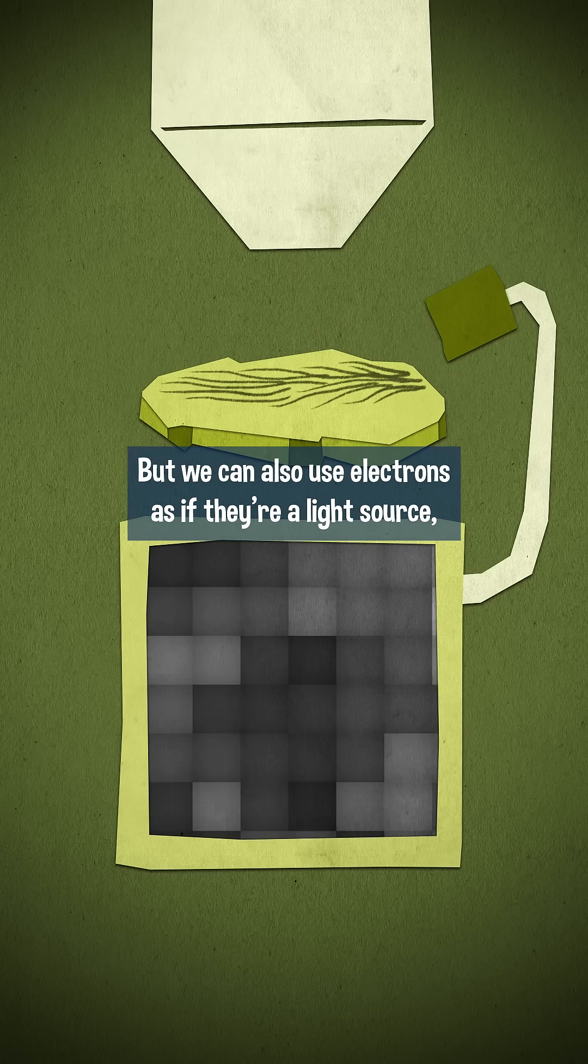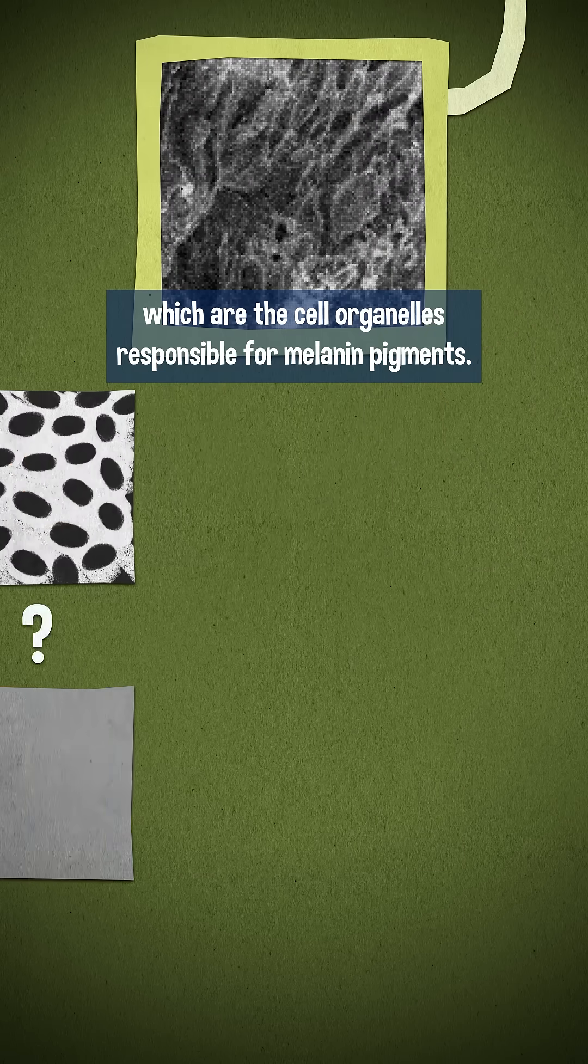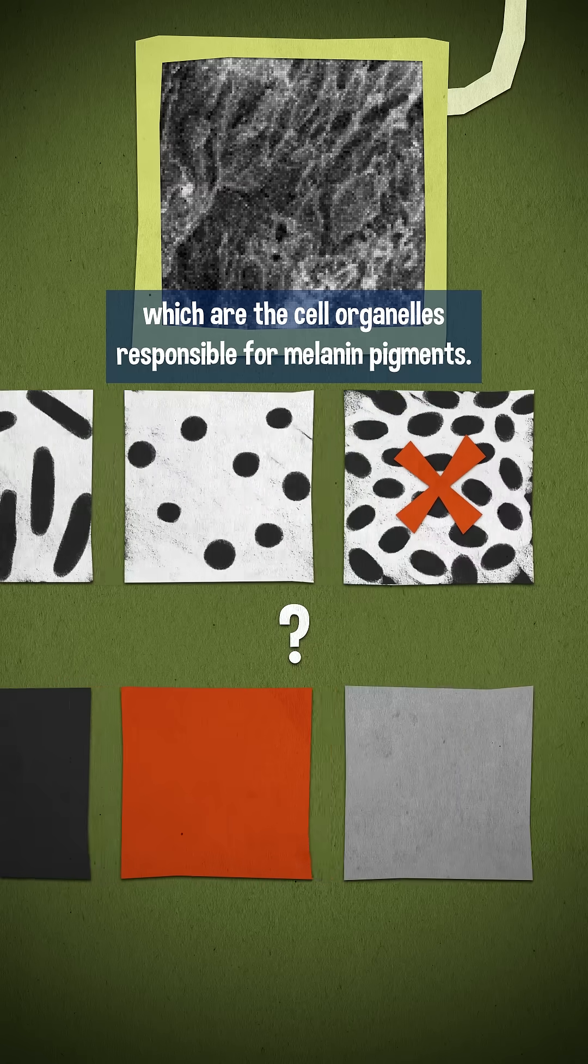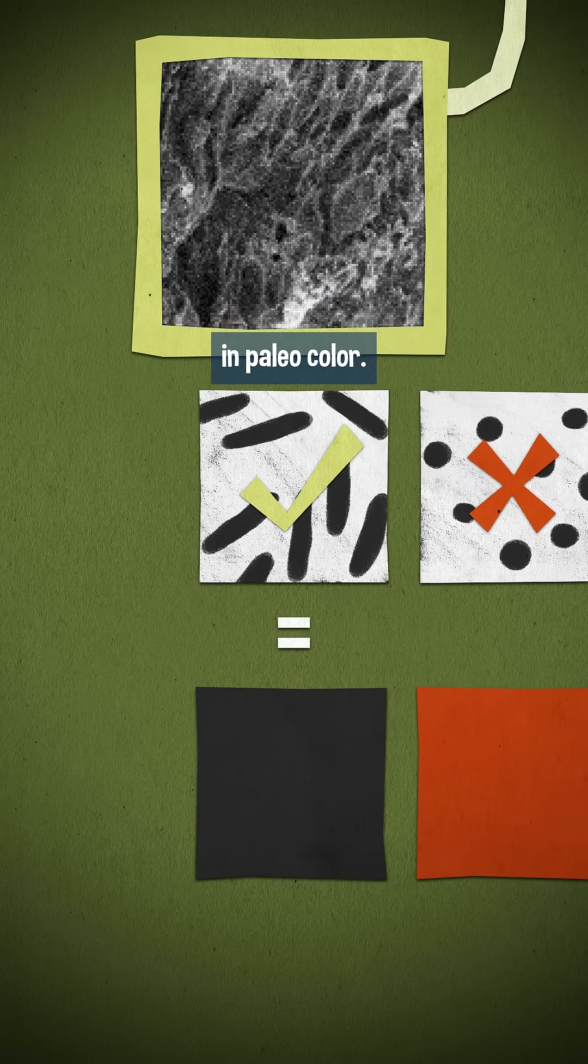But we can also use electrons as if they're a light source, which is how we take pictures of tiny structures like melanosomes, which are the cell organelles responsible for melanin pigments. And figuring out how to interpret those was a major breakthrough in paleo color.